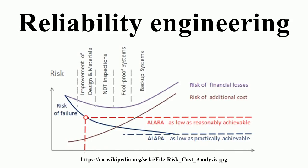The word reliability can be traced back to 1816, by poet Coleridge. Before World War II the term had been linked mostly to repeatability — a test was considered reliable if the same results would be obtained repeatedly. In the 1920s, product improvement through the use of statistical process control was promoted by Dr. Walter A. Shewhart at Bell Labs. Around this time, while Weibull was working on statistical models for fatigue, the development of reliability engineering was proceeding on a parallel path with quality.